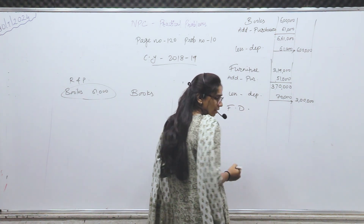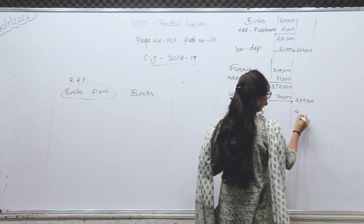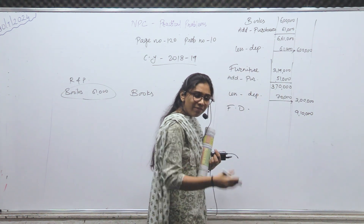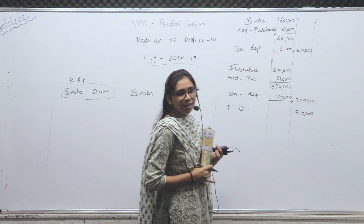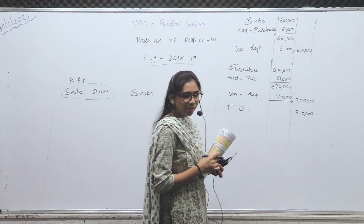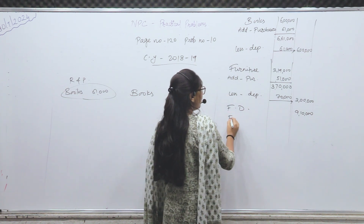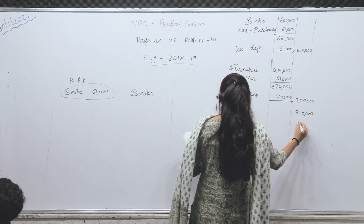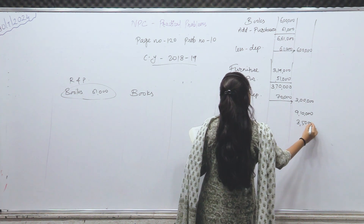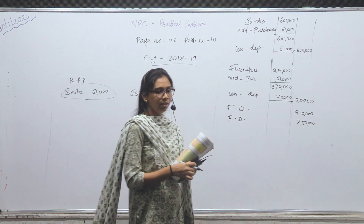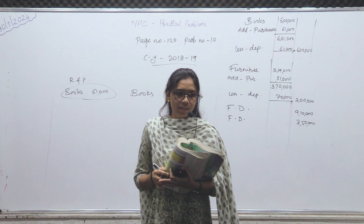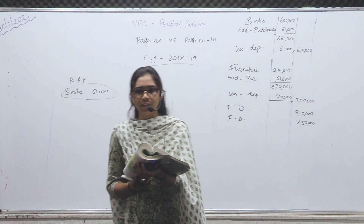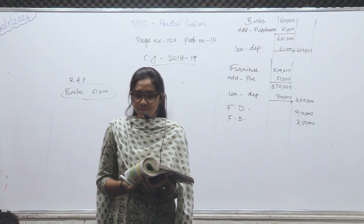9,10,000 before — we have 9,10,000 fixed deposit। 31st March we have 8,50,000। So what do you want to see in the asset side — both are assets — add करके लिख सकते हो, directly भी लिख सकते हो, कैसे भी लिखा तो भी चलेगा। Treatment समझे।